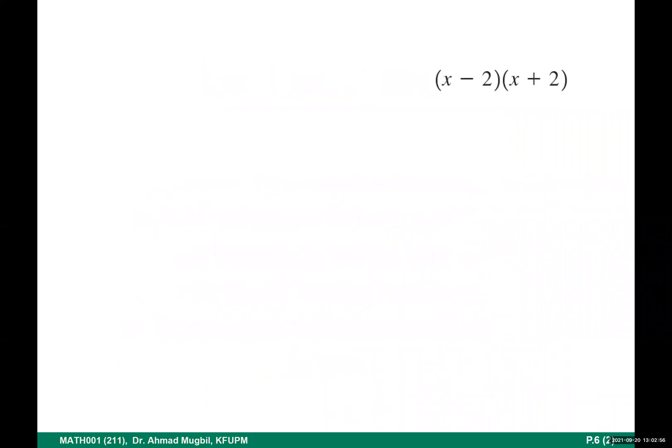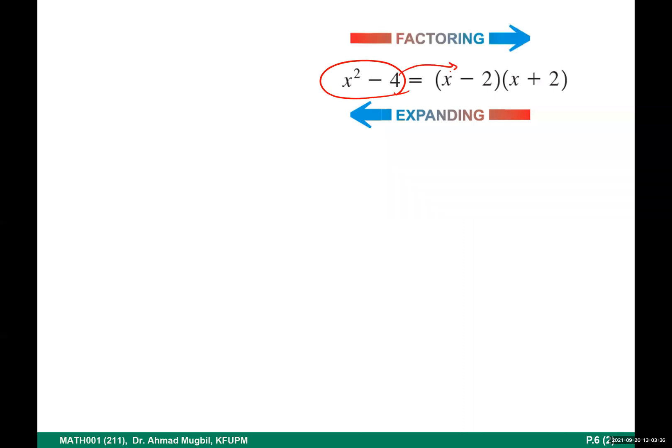Let's relate it to this. Do we have factors here? These are two factors. If you look at what we did in P5 — when we multiply and expand the multiplication — what you get is x squared minus something. What we did going from the factored form to the expanded form is not factoring; this is expanding. You can consider it multiplying or simplifying, but not factoring. Factoring is the opposite: when you have the expanded form and you write it as a product.